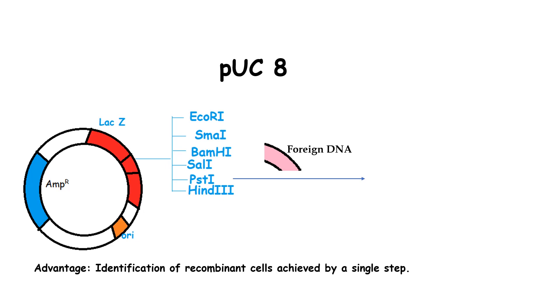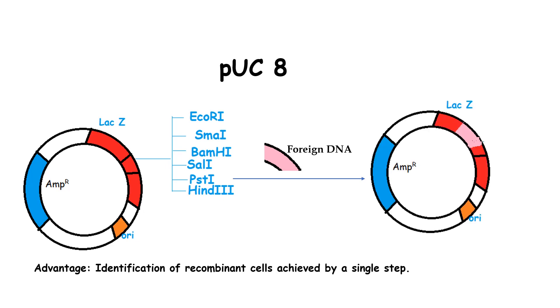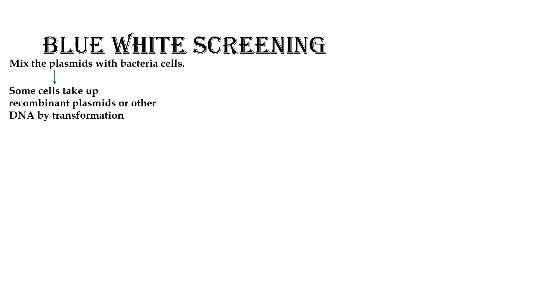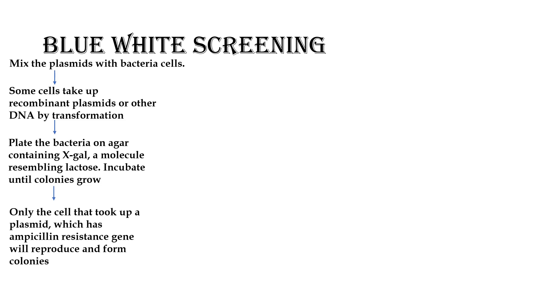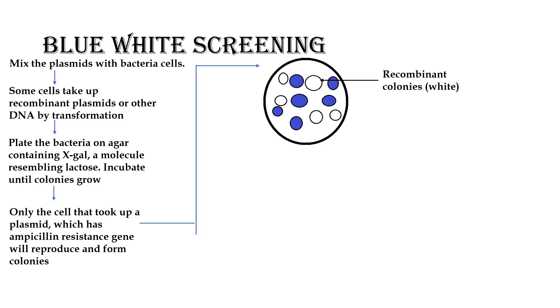We can ligate a foreign DNA into the lacZ gene. For PUC8, we go for blue-white screening. First, we mix the plasmids with the host cells. Some cells take up recombinant plasmids or other DNA by transformation. Then we plate the bacteria on agar containing X-gal, a molecule resembling lactose, and incubate till colonies grow. Only cells that have taken up plasmids with the ampicillin resistance gene will reproduce and form colonies. The recombinant colonies are white in color because of insertional inactivation of the lacZ gene.